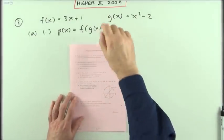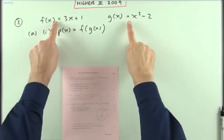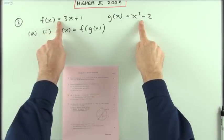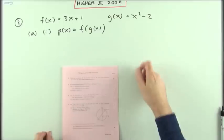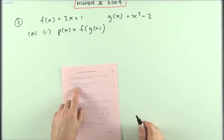Number two from the 2009 Higher paper: composite functions. Here we have two functions, a nice easy one this time with no fractions involved. Part a simply says find these two functions, which is just them either way round.